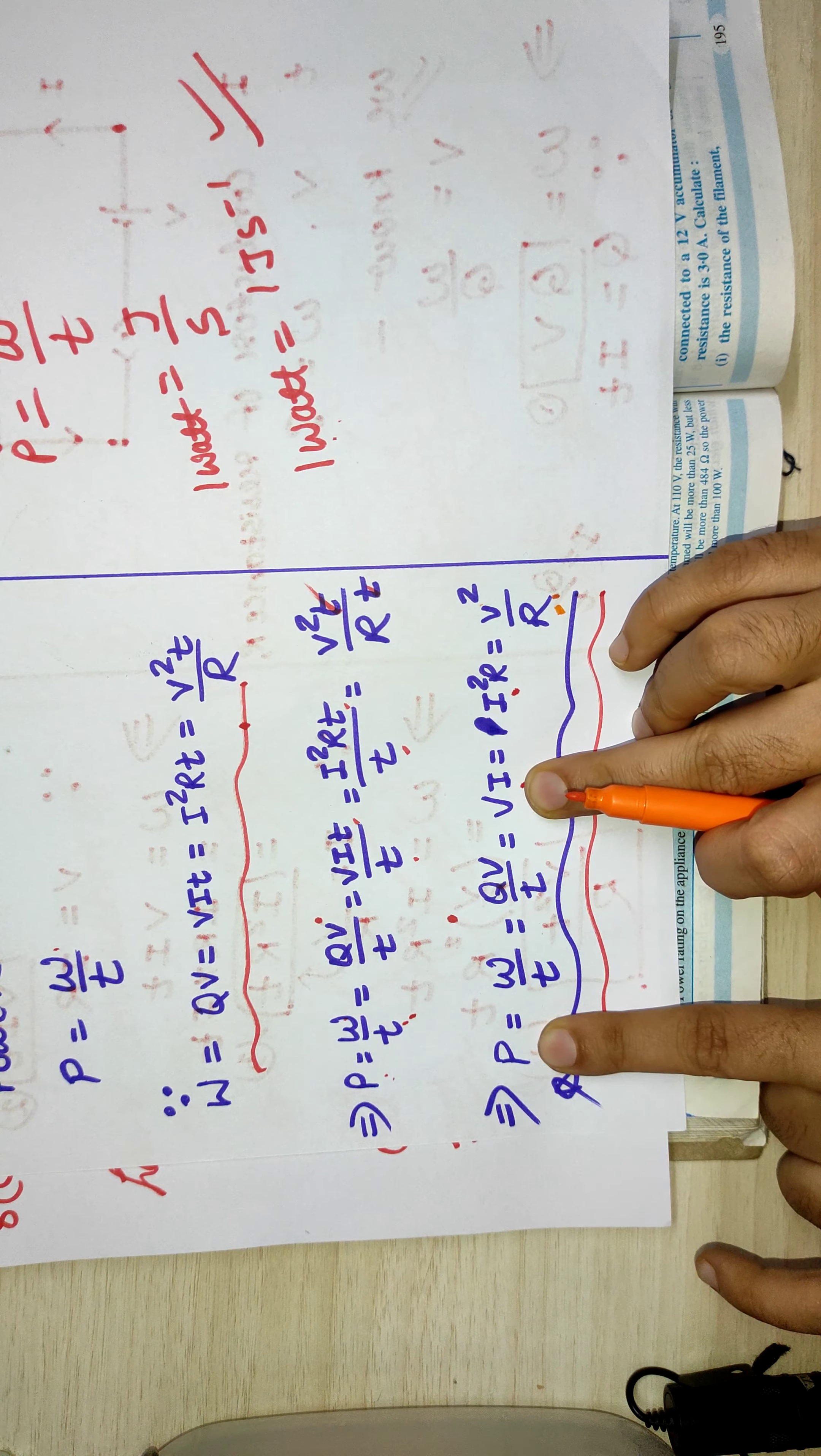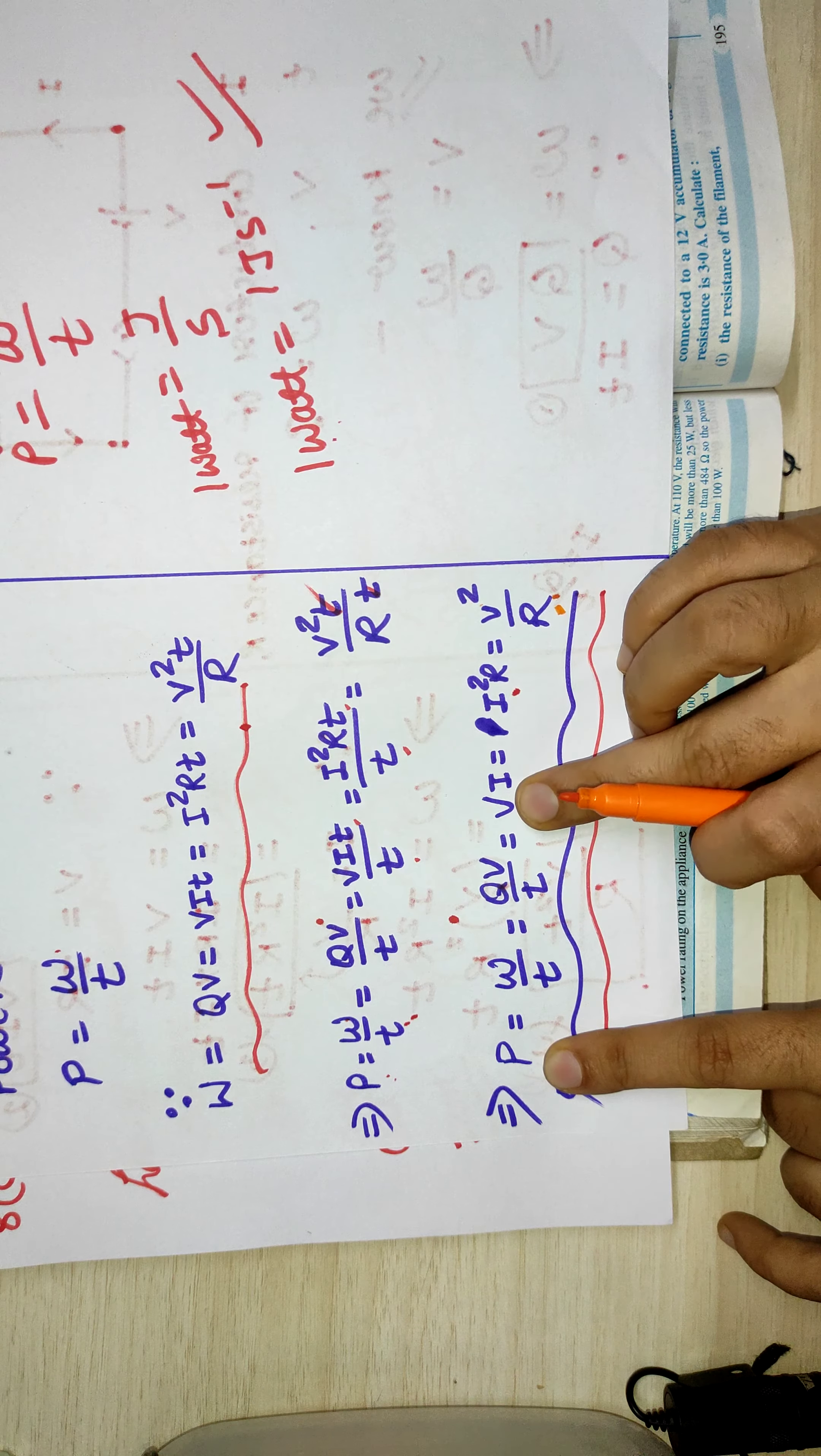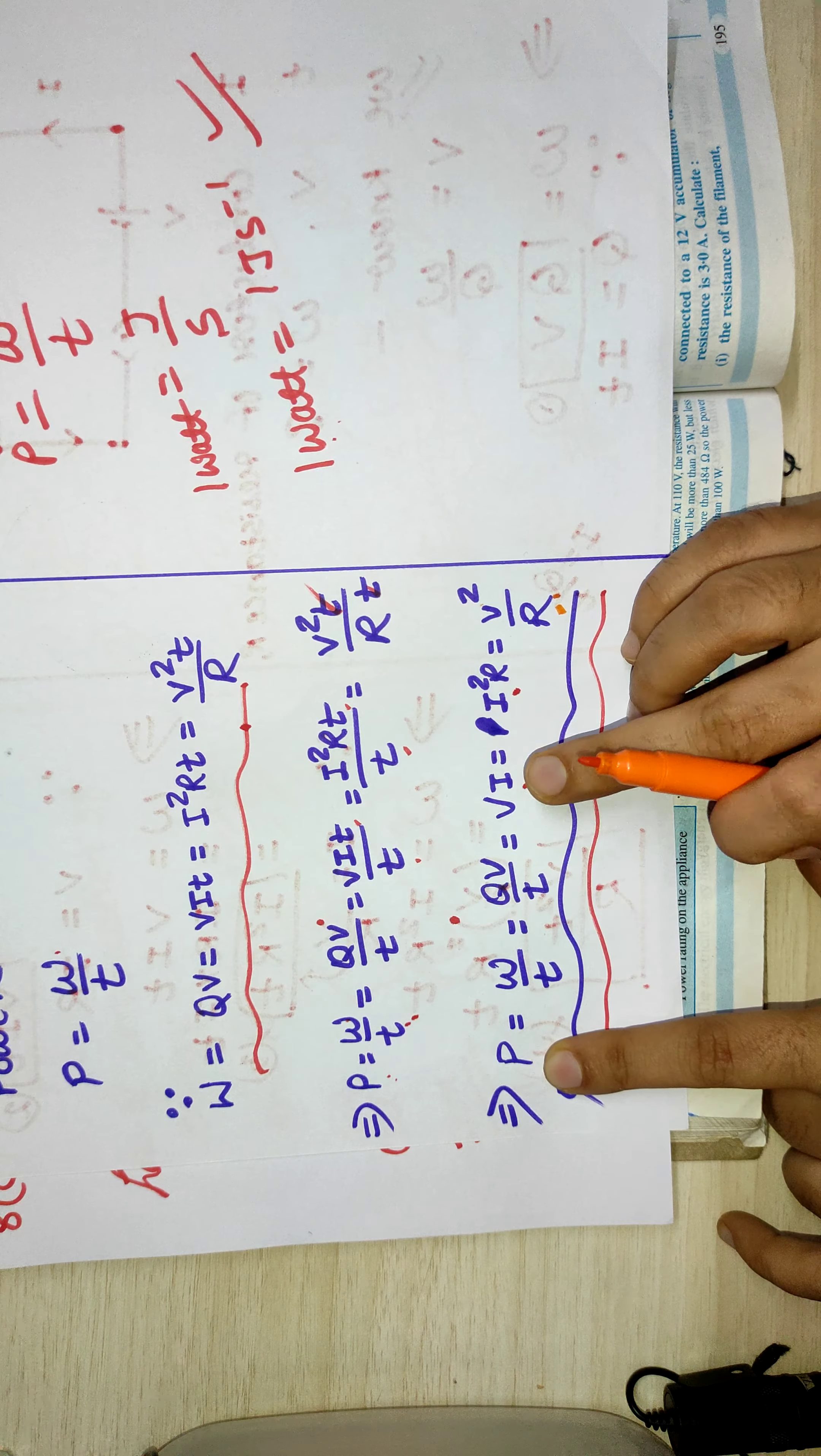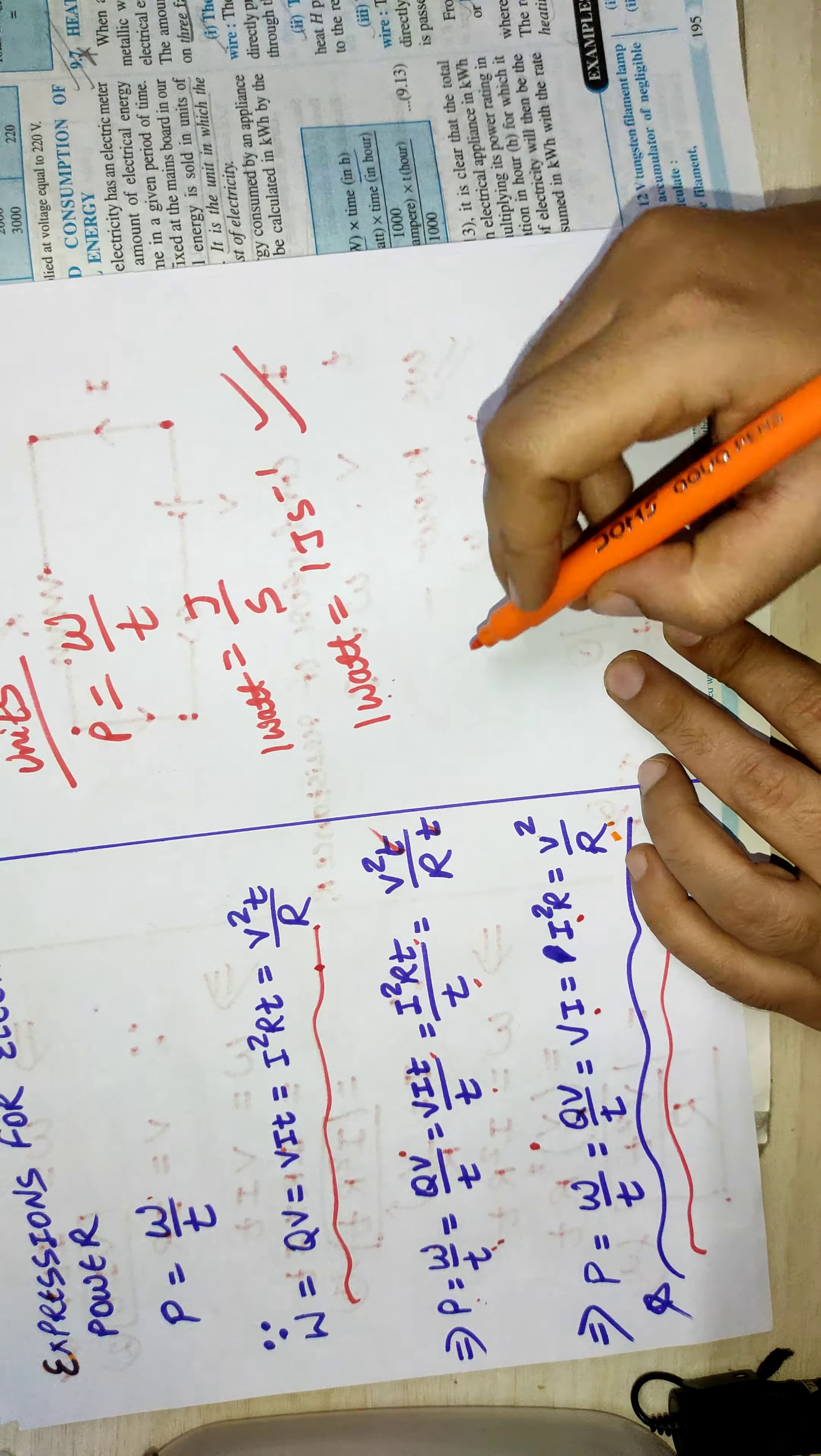Then again, from this formula P is equal to VI, you are knowing the value of P, you are knowing the value of V, you can calculate I. Clear.